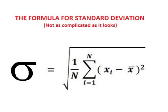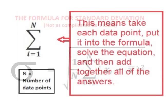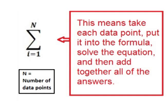The formula for calculating the standard deviation is not as complicated as it looks. The large E is called an epsilon and it is the fifth letter in the Greek alphabet. There is an i equals one on the bottom and an n on the top. The n represents the total number of data points. The epsilon means to take all of the data points one at a time, plug them into the formula as the value for x, solve the formula for each data point, and then add all of the answers together.